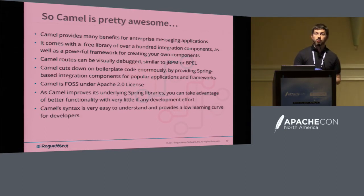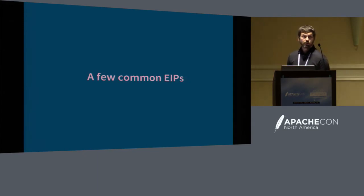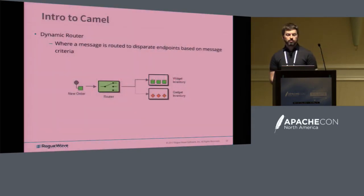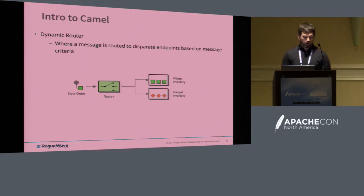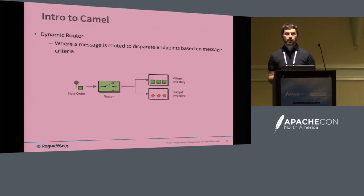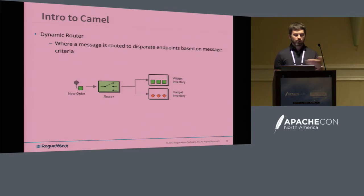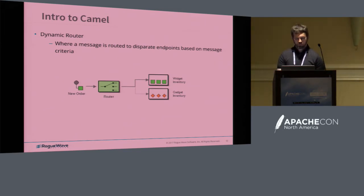I'll show a few common EIPs — enterprise integration patterns — that Camel includes out of the box. First: dynamic router. You might want to route different messages to different endpoints based on message criteria. This is actually what the lab will cover. Say you have two different types of messages coming in — one needs to be processed by one processor, another by another one. In this example, you have widgets and gadgets, and you keep track of inventory in two different systems. The content-based router splits those orders up automatically into widgets and gadgets.